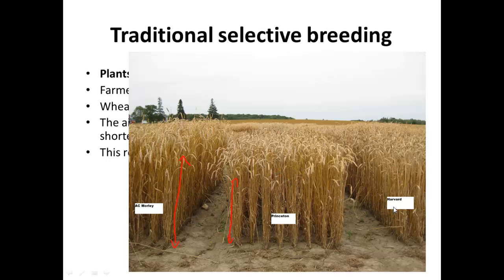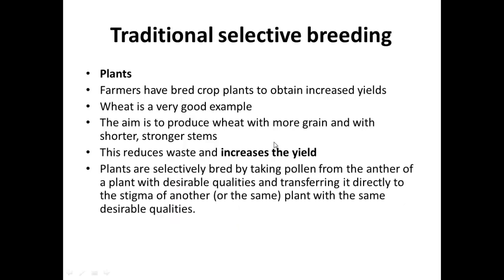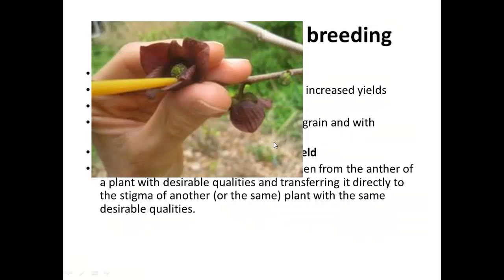You do this by taking the pollen from the anther of a plant with desirable qualities and transferring it directly to the stigma of another plant with the same desirable qualities. It's difficult to show in wheat plants, which are wind pollinated with smaller flowers and tend to self-pollinate — so it's a slightly trickier business. It's very easy to illustrate with orchids, which are insect pollinated with big beautiful flowers.